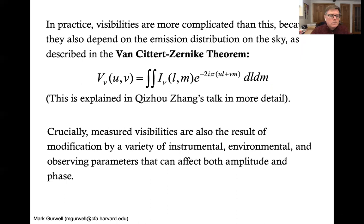Crucially, the measured visibilities are also the result of a lot of modifications as the light travels through space and through the atmosphere down into the antennas, through the electronics, until it is actually turned into visibility data we can use. So it's a lot of instrumental, environmental, and observing parameters that affect both the amplitude and phase of the visibility.